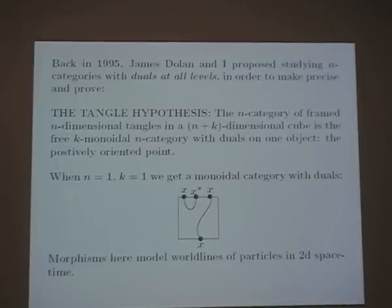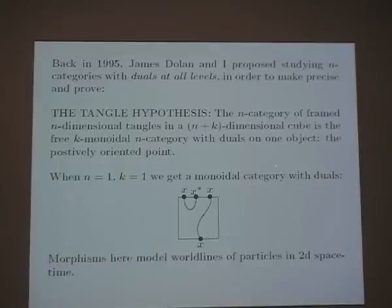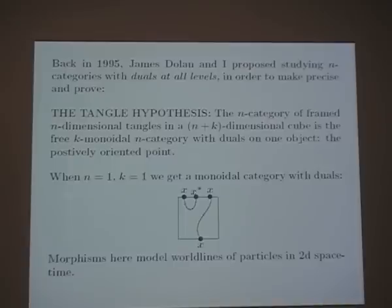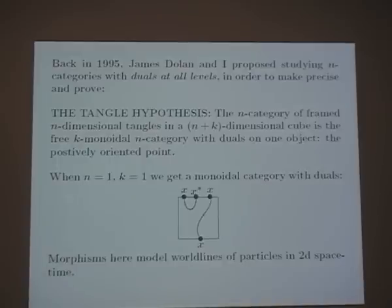When collaborator James Dolan and I were thinking about this, we were interested in n-categories with duals at all levels — objects, morphisms, and so on. We have the hypothesis that the n-category of framed n-dimensional tangles in an (n+k)-dimensional cube is the free k-monoidal n-category with duals on one object. Taking n=1 and k=1: a 1-monoidal 1-category is just a monoidal category, and we're looking at 1-dimensional tangles in a square.